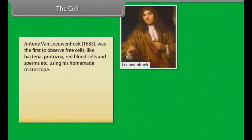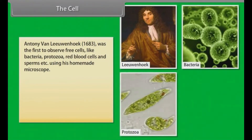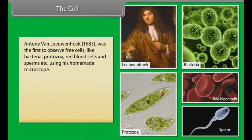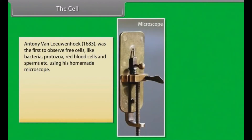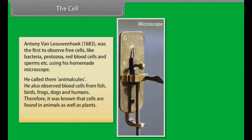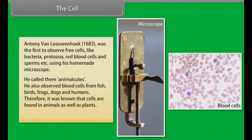Antony van Leeuwenhoek was the first to observe free cells like bacteria, protozoa, red blood cells, and sperms using his homemade microscope. He called them animalcules. He also observed blood cells from fish, birds, frogs, dogs, and humans. Therefore, it became known that cells are found in animals as well as plants.